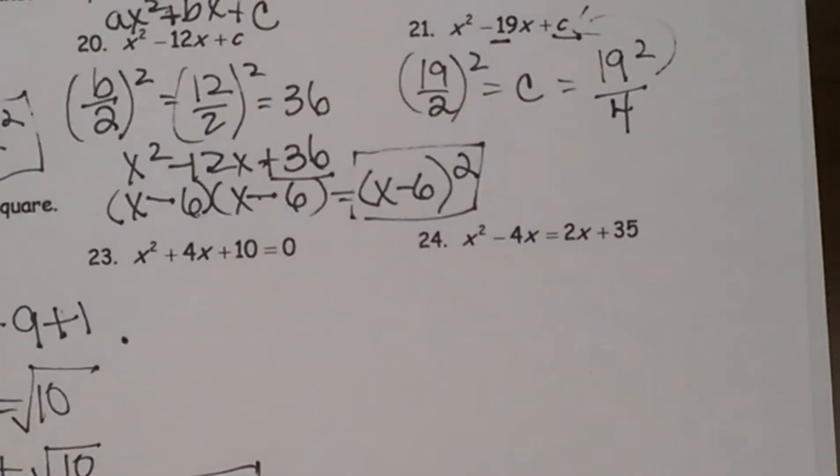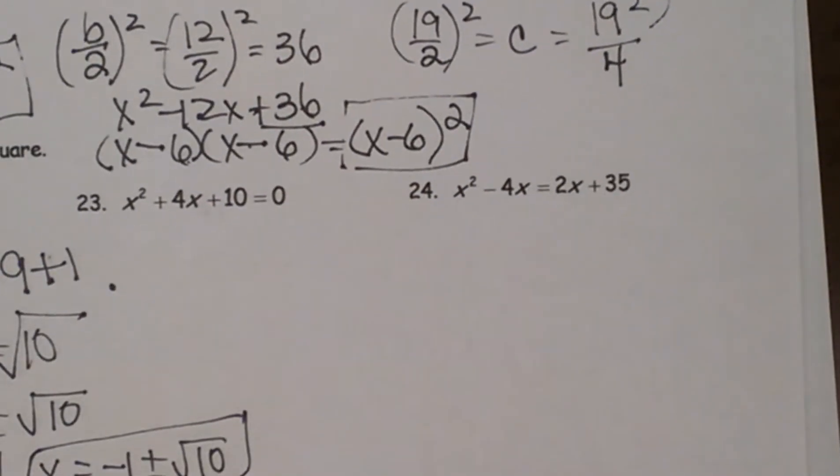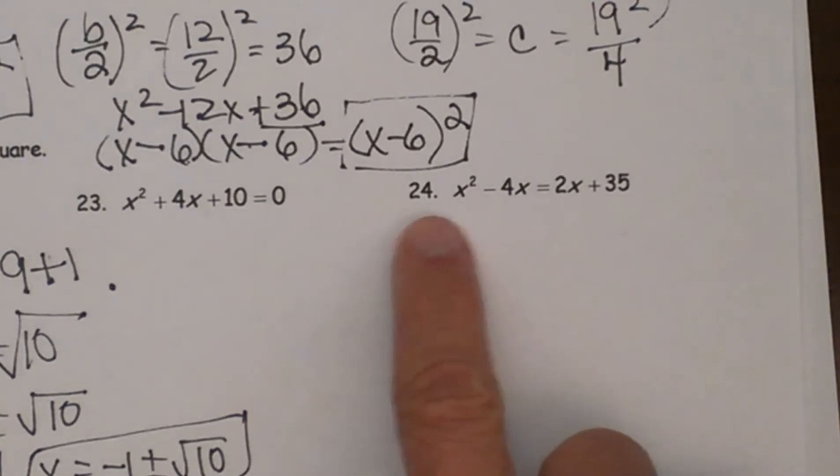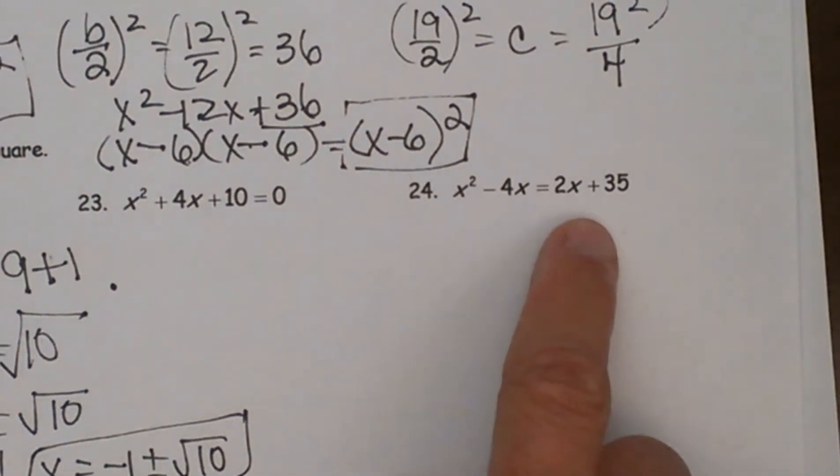Welcome back to MooMooMath. We are going to try some more completing the square problems. Okay, here we go. We have x² minus 4x is equal to 2x plus 35.